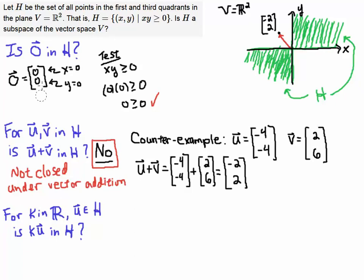Now, let's just test the third case. We've already answered the question that H is not a subspace of the vector space V, but let's just take a look at the third condition. It'll be instructive. So, if we take some real number and we multiply it by any vector in H, any vector in these two quadrants, we want to know, is K times the vector in H? And the answer to that is going to be yes, and here's why.